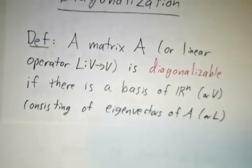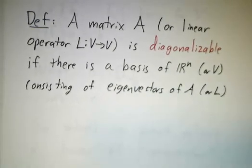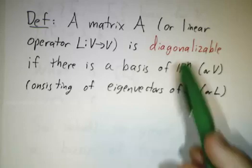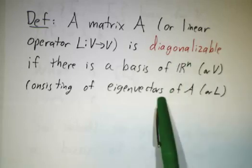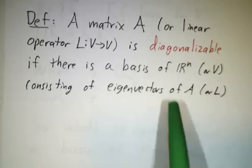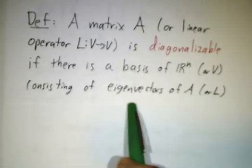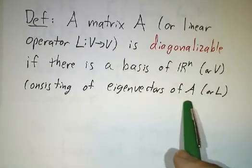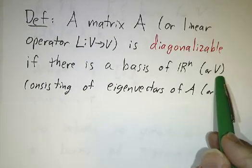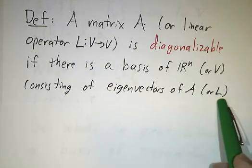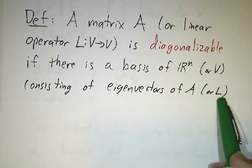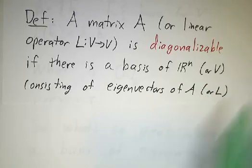We will say that a matrix, or if you prefer a linear operator, is diagonalizable if you find a basis consisting of eigenvectors. So if you have a basis of R^n consisting of eigenvectors of the matrix A, or a basis of the abstract vector space V consisting of eigenvectors of the linear operator L, we'll say that L or A is diagonalizable.